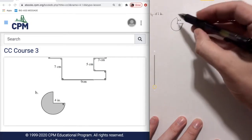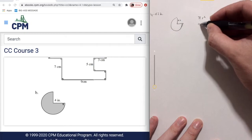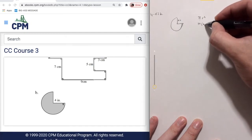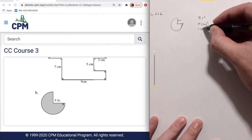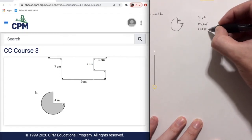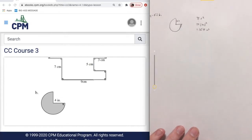We know that if this was a full circle, the area of that circle would be pi times 4 inches squared, which would equal 16 pi square inches. That's if it was a full circle.